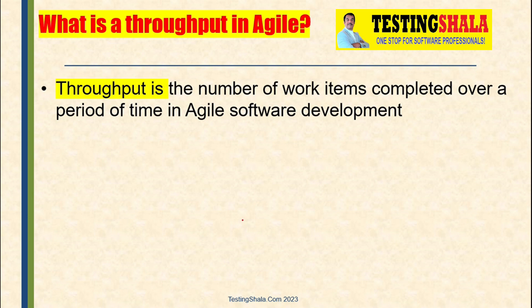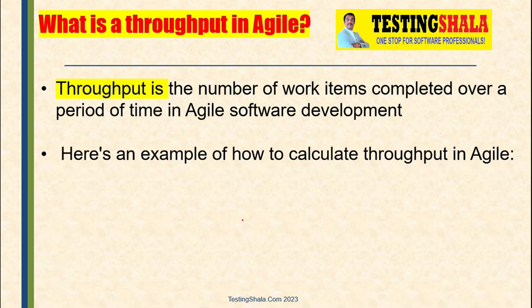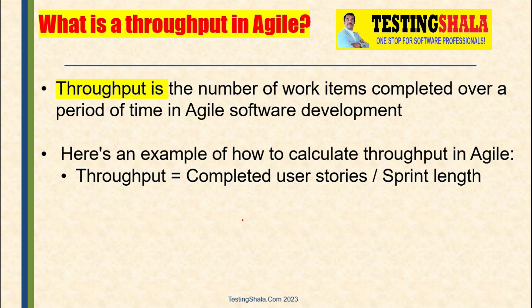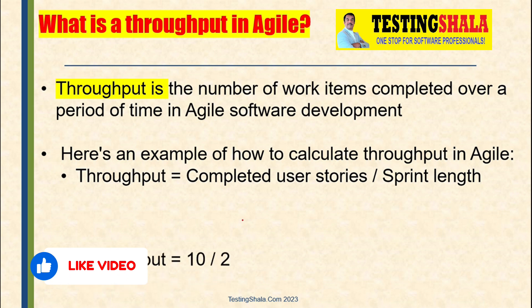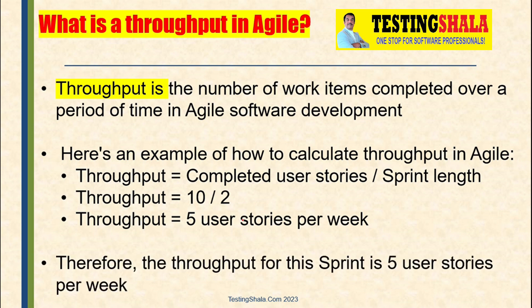What is throughput in Agile? Throughput is the number of work items completed over a period of time in Agile software development. To calculate throughput: if we planned 10 user stories and eight were completed over a sprint length of two weeks, then throughput is 8 divided by 2 weeks, meaning we can deliver approximately four to five user stories per week. This is all about throughput in Agile.